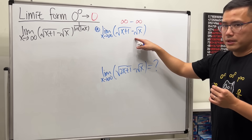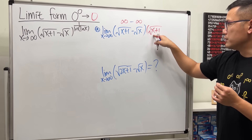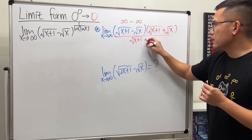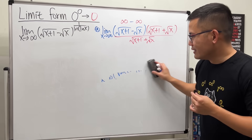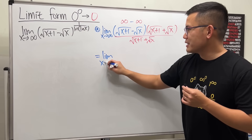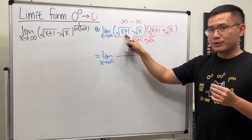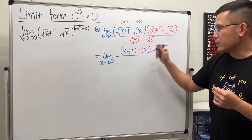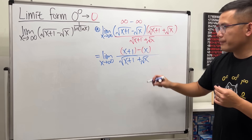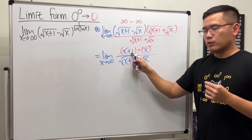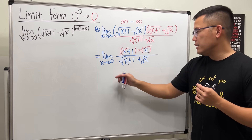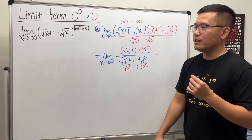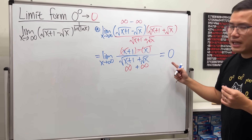I will show you guys this legitimately. To do so, I will multiply the top and bottom by the conjugate, which is square root of x plus 1 plus square root of x. So we have the limit as x approaching infinity. On the top, we square this to get x plus 1, then minus x. On the bottom, we just have square root of x plus 1 plus square root of x. As you can see, x minus x cancel, so we just have 1 on top. When x is approaching infinity, we get infinity plus infinity — still infinity. So we have 1 over infinity, and we can conclude that equals 0.